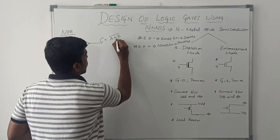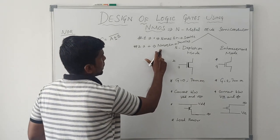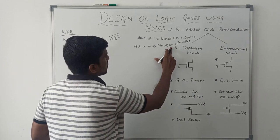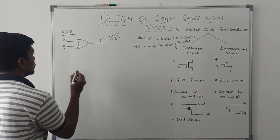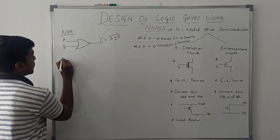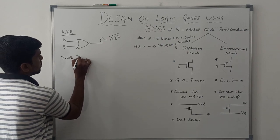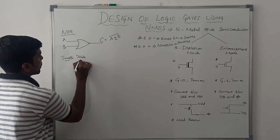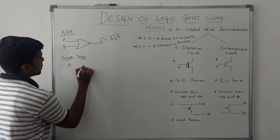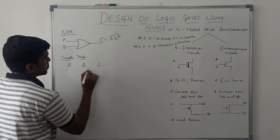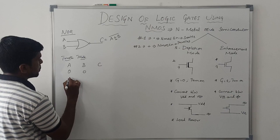Now for the NOR gate. In this boolean expression the operator is plus. Plus in the sense that the NMOS enhancement mode transistors are connected in parallel. Now I will write the truth table. The NOR gate has two variables, so these two variables make four combinations of input.